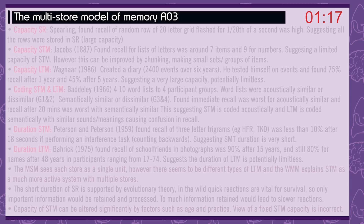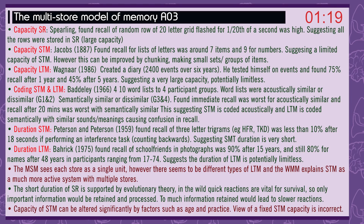Capacity of the sensory register: Sperling found that recall of a random row of a 20-letter grid flashed for one-twentieth of a second was high, suggesting all the rows were stored in the sensory register, indicating a large capacity. Capacity of short-term memory: Jacobs in 1887 found recall for lists of letters was around 7 items and 9 for numbers, suggesting a limited capacity. However, this can be improved by chunking — making small sets or groups of items.